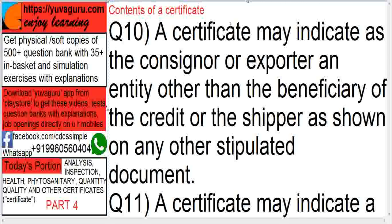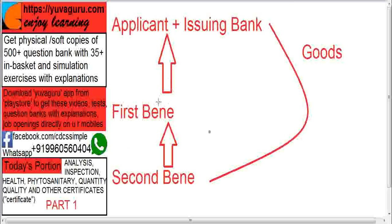Q10: a certificate may indicate as the consignor or the exporter an entity other than the beneficiary of the credit, or the shipper as shown on any other stipulated document. This happens in transfer LCs. Here, the issuing bank issues the LC to the first beneficiary, the first beneficiary transfers it to the second, the second beneficiary ships the goods directly to the issuing bank or the applicant, and then sends the documents to the first beneficiary. The first beneficiary will replace the documents sent by the second beneficiary.